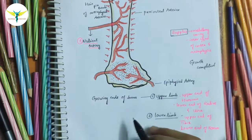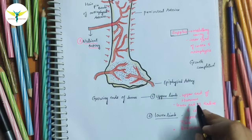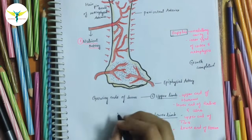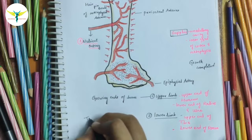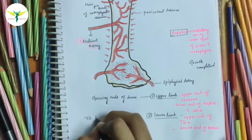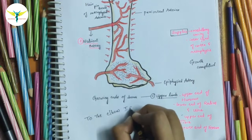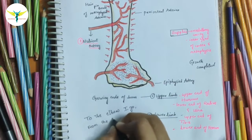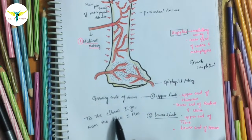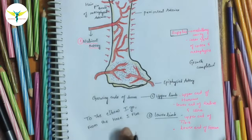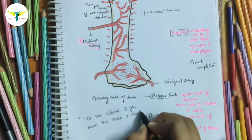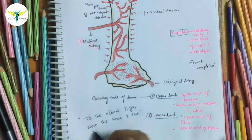These growing ends can be remembered by a mnemonic: 'To the elbow I go, from the knee I flee.' This mnemonic helps recall the growing ends of bones in both the upper limb and the lower limb.